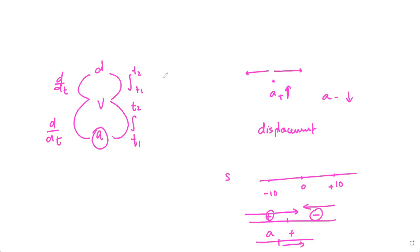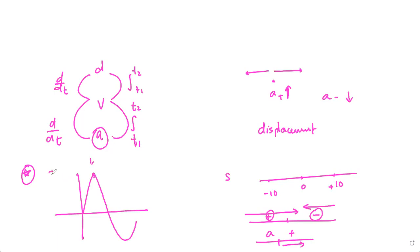Now let's look at the displacement graph, s(t) versus t. Suppose point (1, 3) and point (2, -4) are on the graph — you started at origin, displaced to the right reaching 3 units, then turned back past the origin, went to the left reaching -4 at 2 seconds, and then came back closer to the origin.